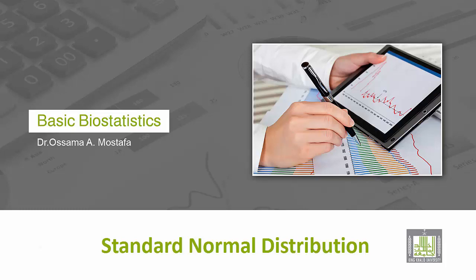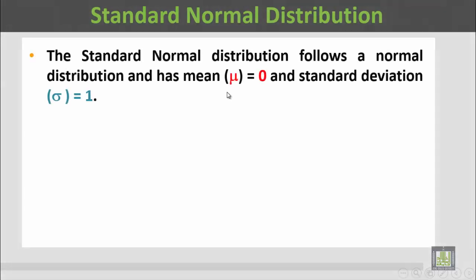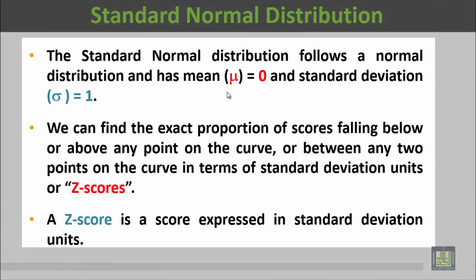The Standard Normal Distribution follows a normal distribution and has a mean mu equal to 0 and standard deviation sigma equal to 1. التوزيع الطبيعي المعياري يتبع التوزيع الطبيعي وله متوسط حسابي mu يساوي 0 وانحراف معياري sigma يساوي 1.